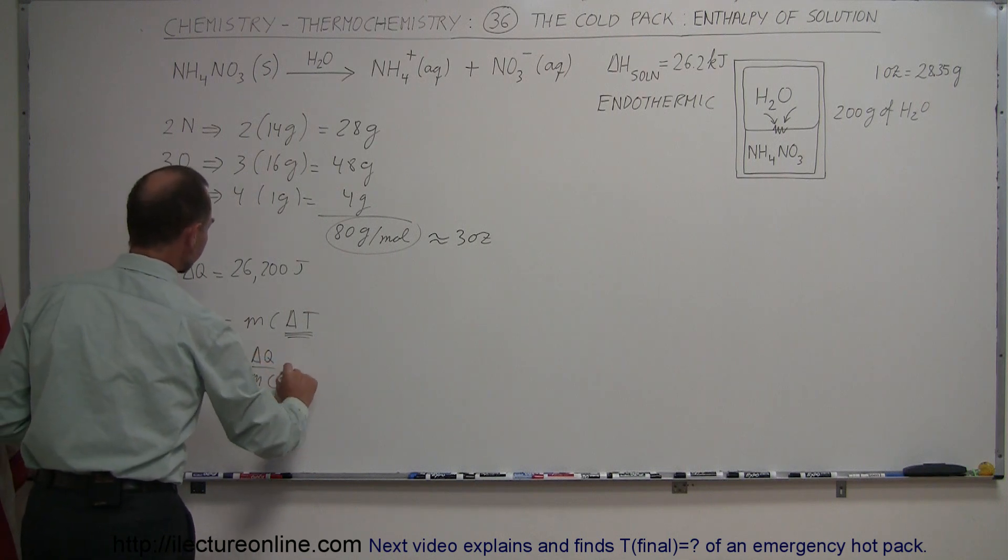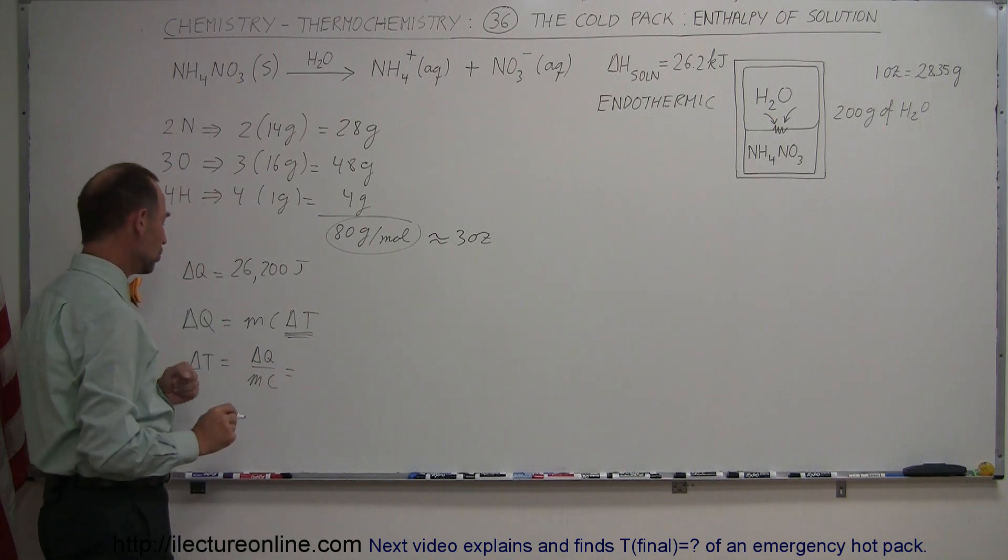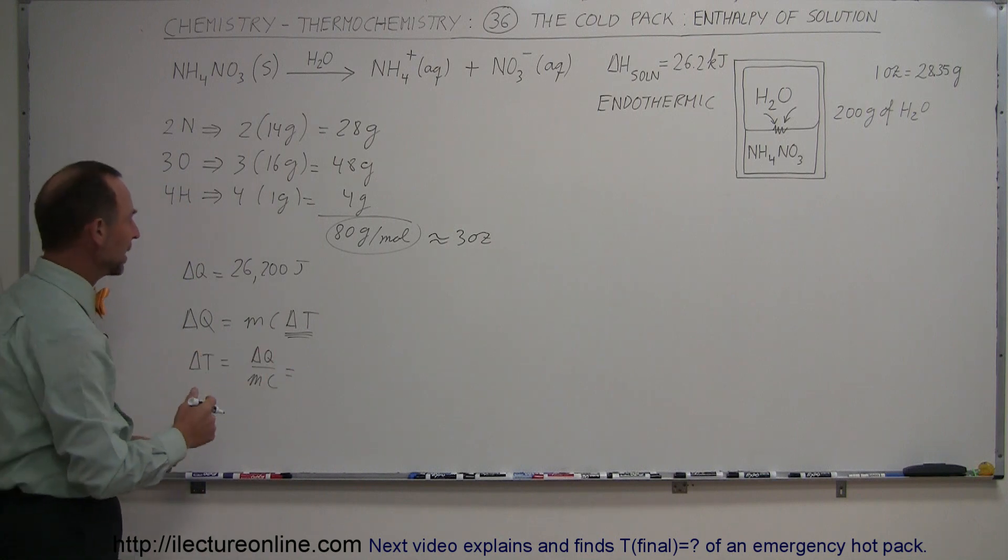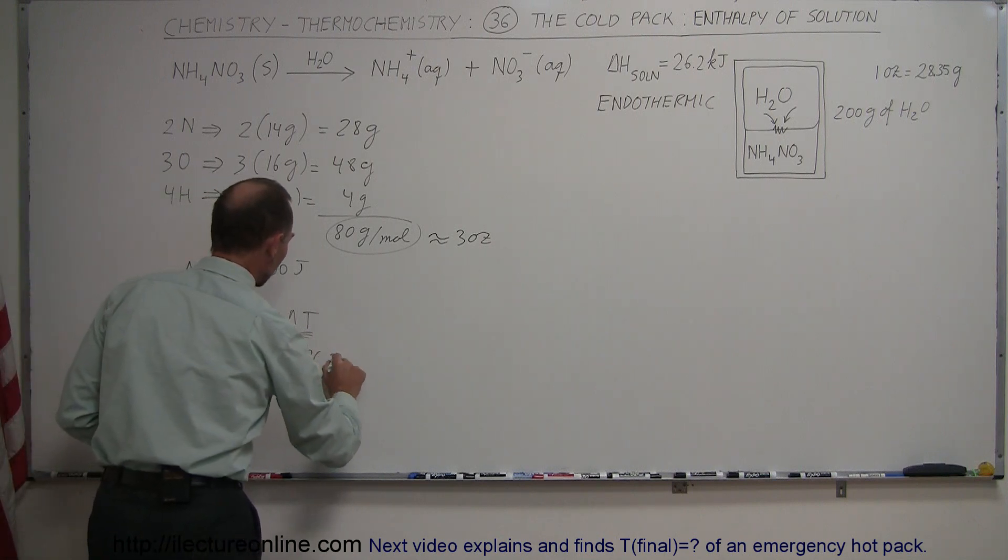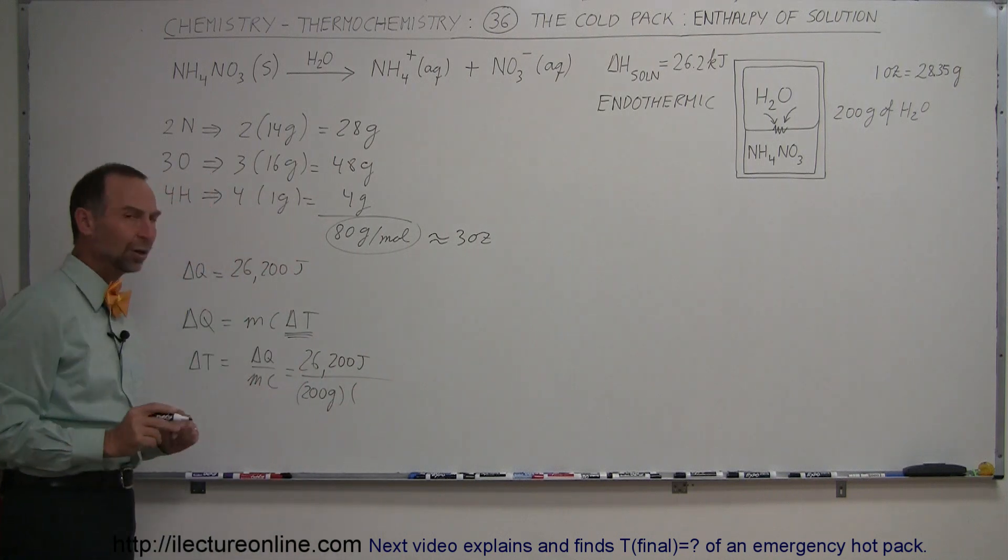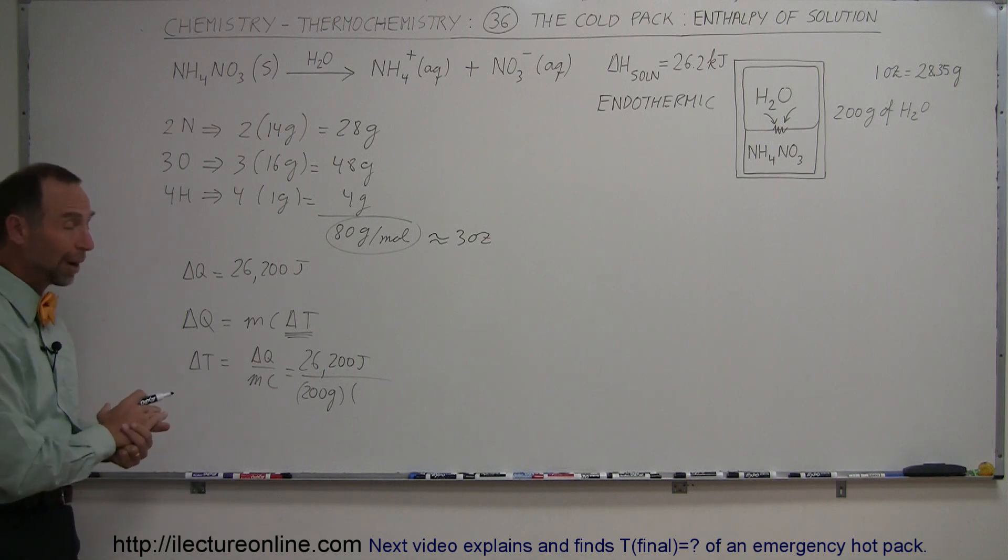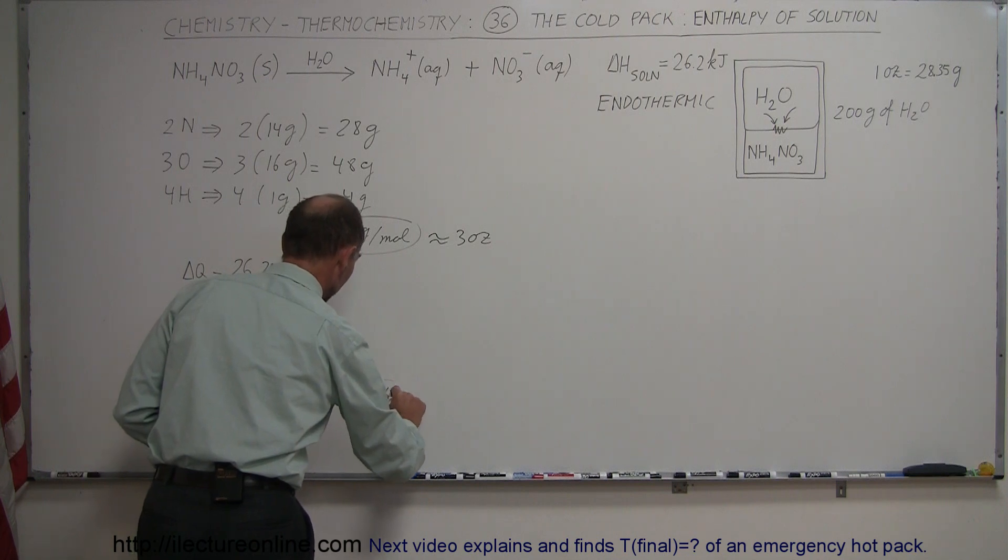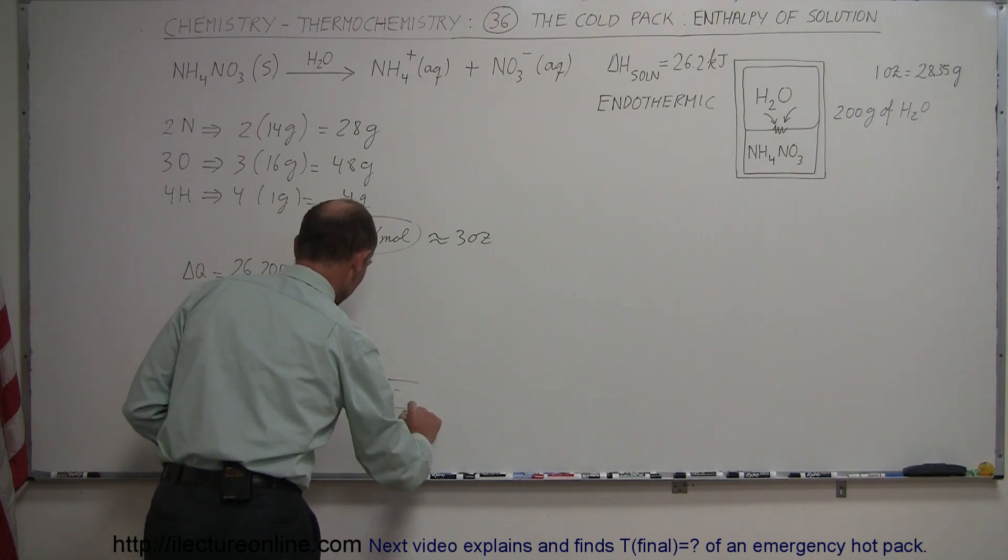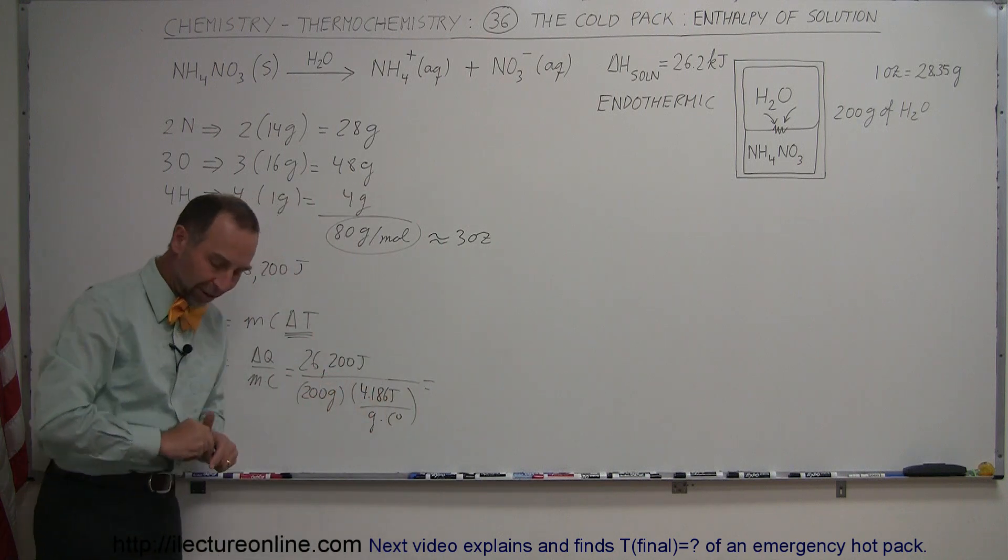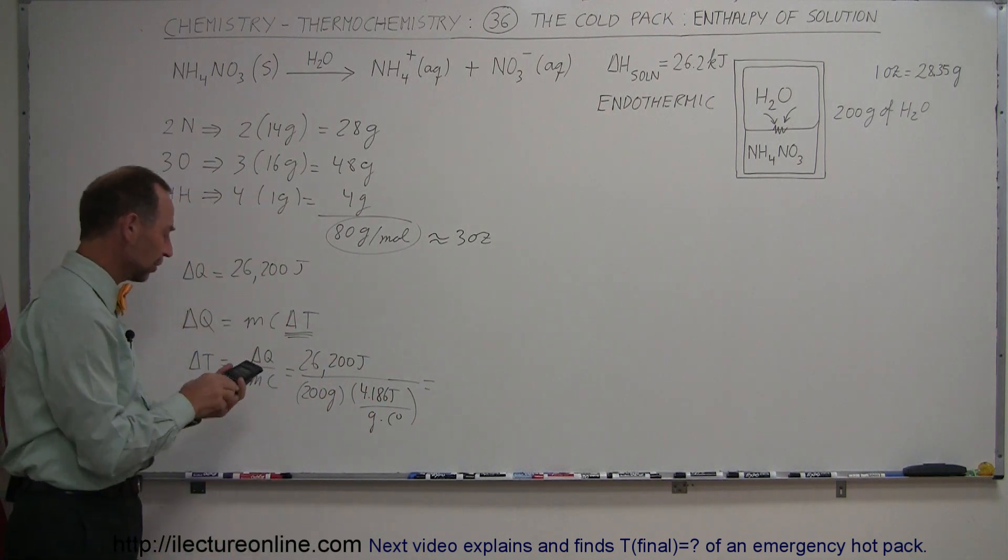So we can then say that the delta T is equal to the delta Q divided by m c. Delta Q, well that would be what we just got right here, right? That's the heat absorbed by the reaction, which is 26,200 joules. We divide it by the mass of the water, which is 200 grams, and divide that by the specific heat of water, which is one calorie per gram per centigrade degree or 4.186 joules per gram per centigrade degree.